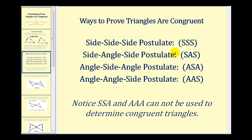Remember from the previous video, there are four postulates that can be used to verify two triangles are congruent. We have the side-side-side postulate, the side-angle-side postulate, the angle-side-angle postulate, and the angle-angle-side postulate. Notice that side-side-angle and angle-angle-angle cannot be used to determine congruent triangles.